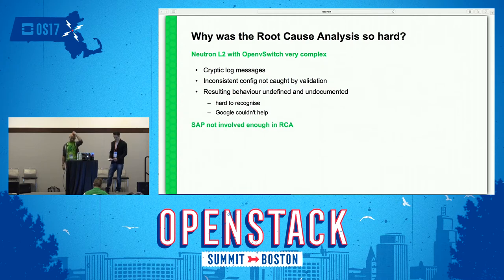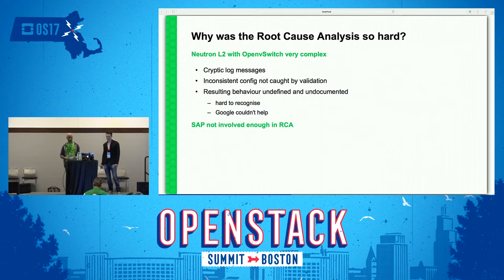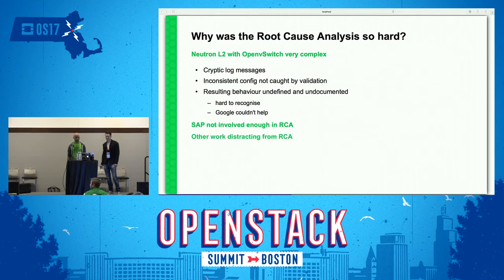Why did it take so long to figure out? Neutron L2, especially with Open vSwitch, is just a really complicated beast with hundreds or thousands of log messages requiring expert knowledge. The other mistake, in hindsight from the SUSE side, was not involving SAP enough in the ongoing investigations — they had great knowledge about exactly what happened during the maintenance window. And of course, everyone had other responsibilities competing for their time.